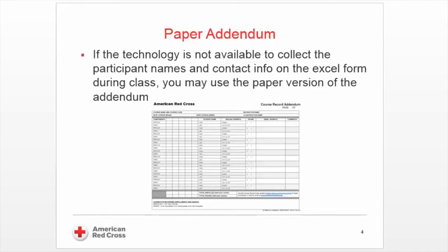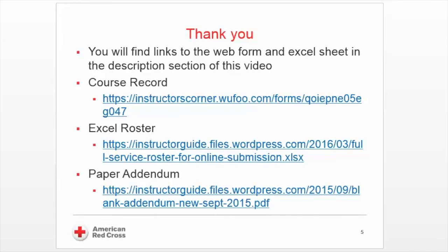If you don't have the technology in the classroom to have students enter their contact information in the Excel sheet, you can continue using the traditional paper version of the addendum. You would still have to scan it as an image or PDF onto your device so that you can attach it to the web form version of the course record.